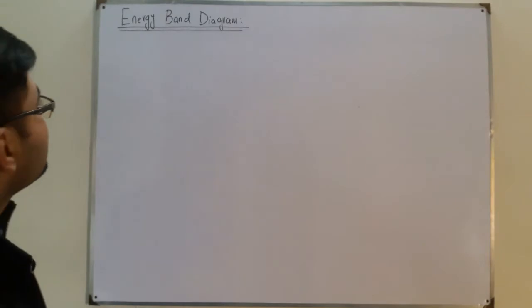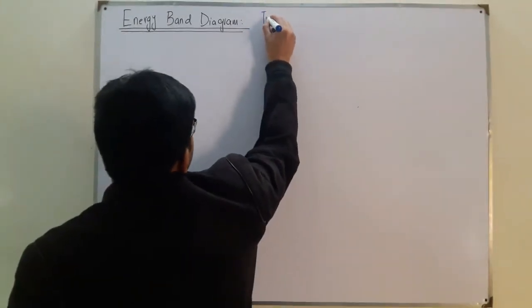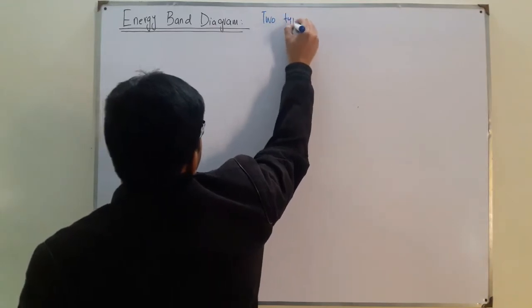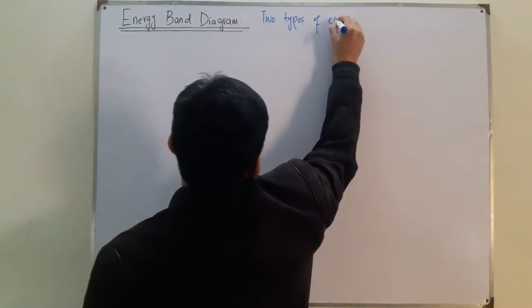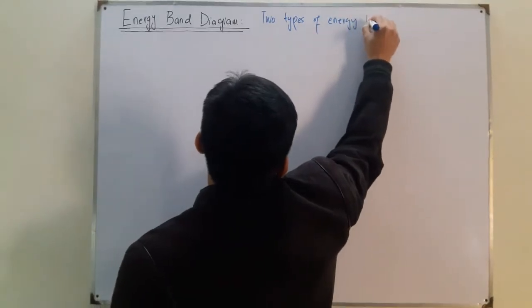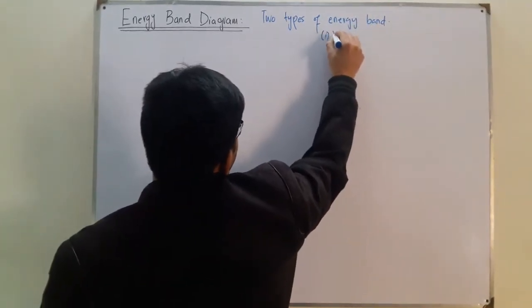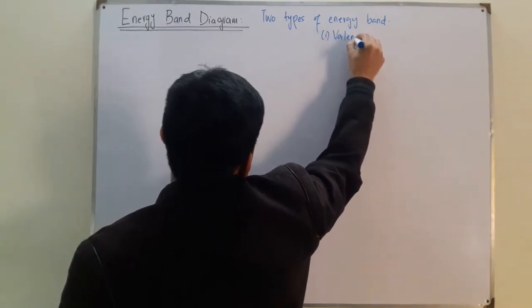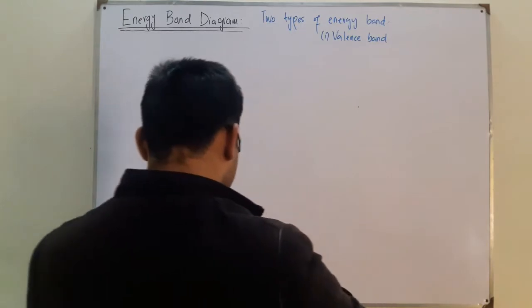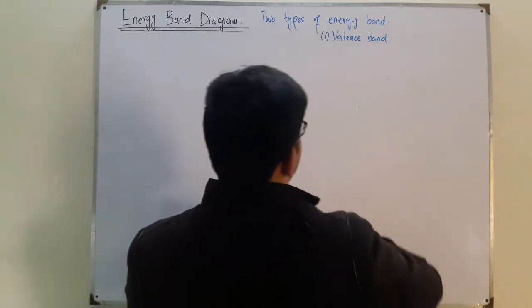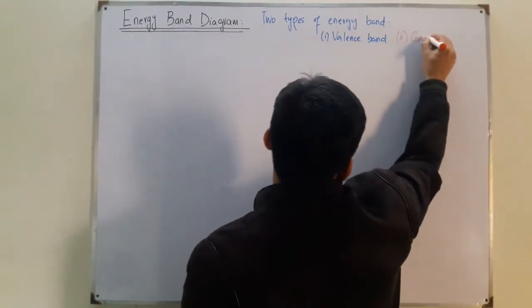We have two types of energy bands. Number one is the valence band, and number two — shown here in red — is the conduction band.